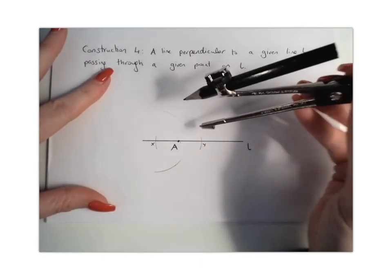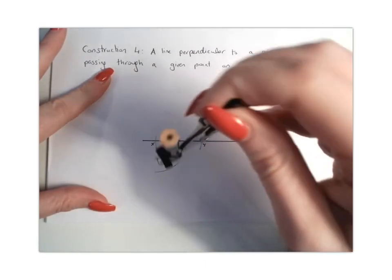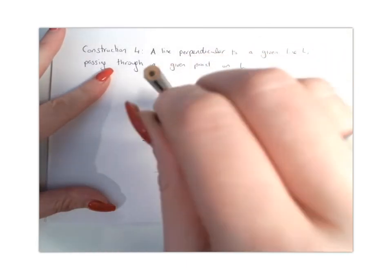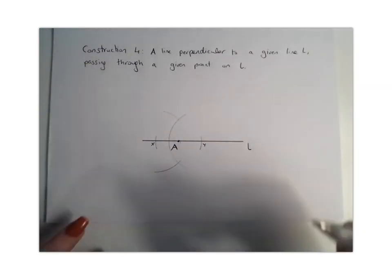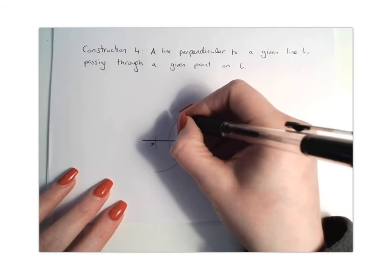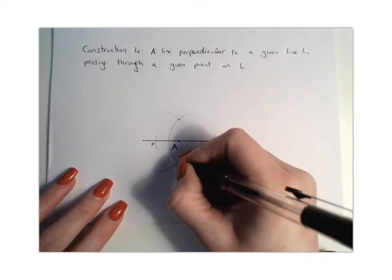Keeping it the same distance, you're going to go to point Y and do the same thing. We're going to go to the two places where they overlap or intersect. So we've got this point here and this point here.